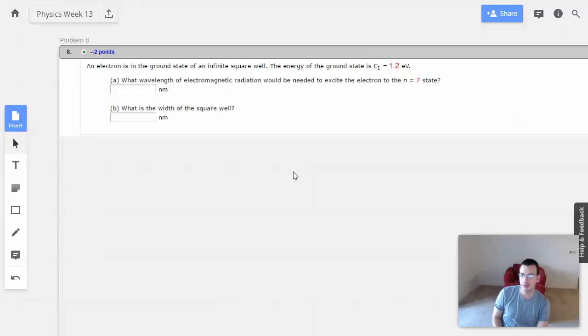Week 13, problem 8. An electron is in the ground state of an infinite square well. The energy of the ground state is E1, which is 1.2 electron volts. What wavelength of electromagnetic radiation would be needed to excite the electron to the n equals 7 state?